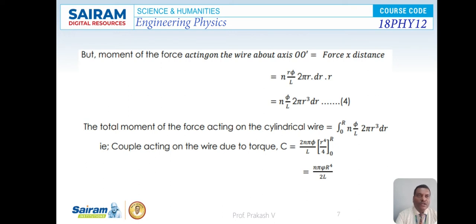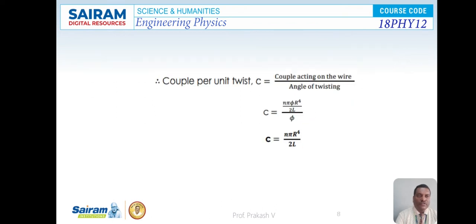The total moment of force acting on the cylindrical wire = ∫₀ᴿ (N/L)·2π·r³·dr. Therefore, the couple C acting on the wire due to torque is C = (2Nπφ/L) × [r⁴/4] from 0 to R. After applying the limits, C = Nπφr⁴/(2L). Therefore, couple per unit twist is given by C = Nπφr⁴/(2L) ÷ φ. Since φ cancels, C = Nπr⁴/(2L).